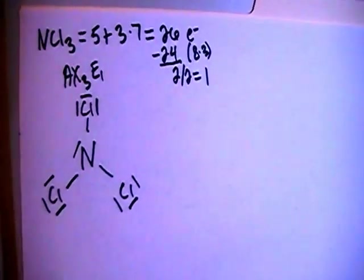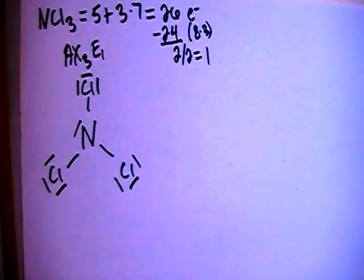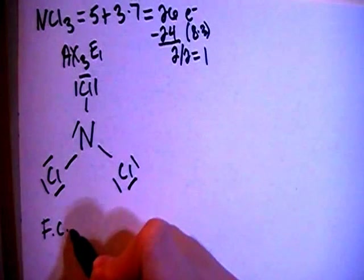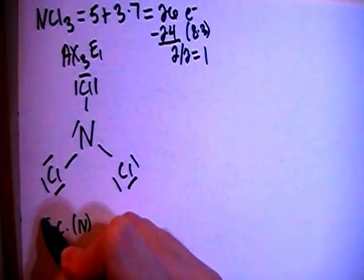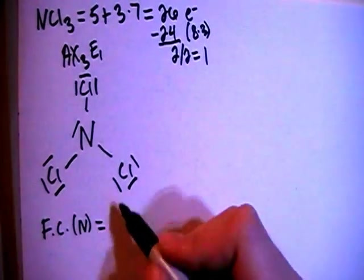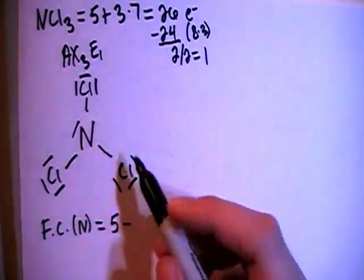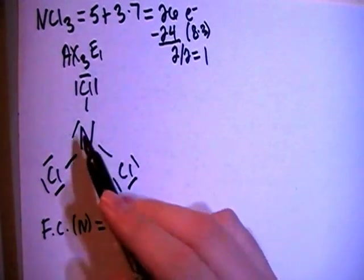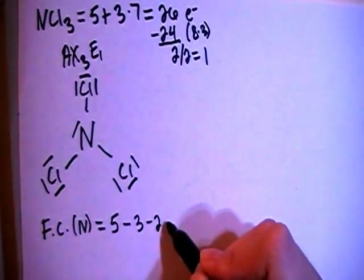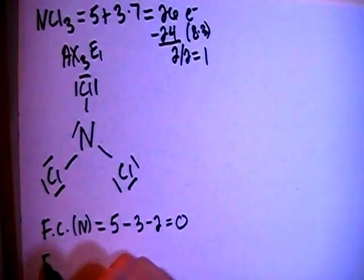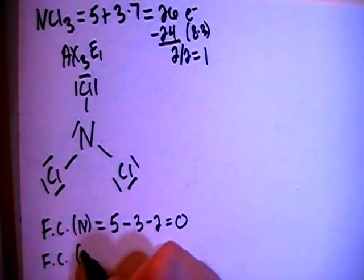Now let's go ahead and verify by calculating the formal charges. So the formal charge on the nitrogen is going to be equal to the five valence electrons brought in minus three bonds minus two non-bonding electrons for a formal charge of zero, and then the formal charge on each of the chlorines.